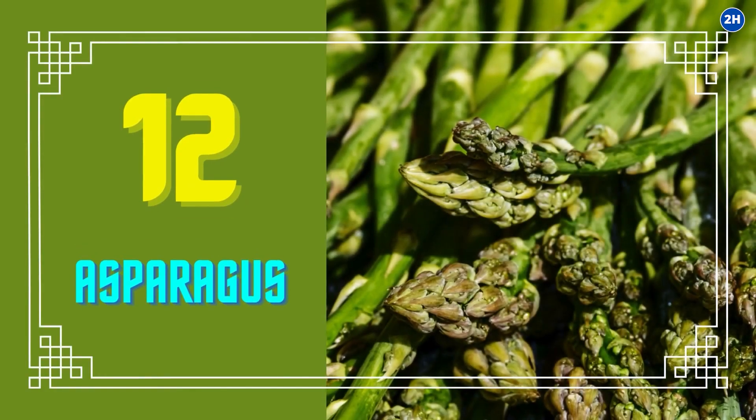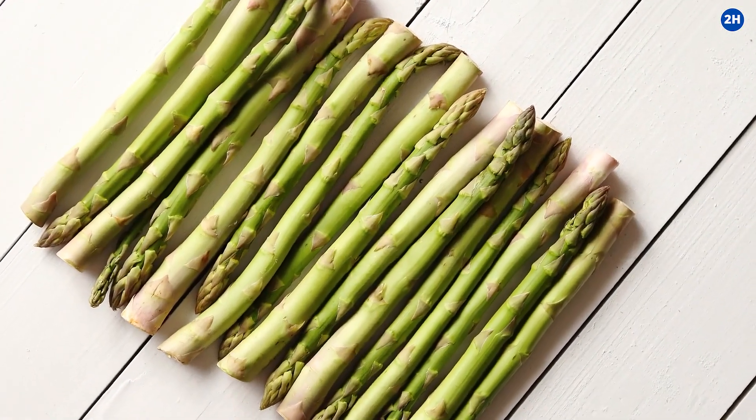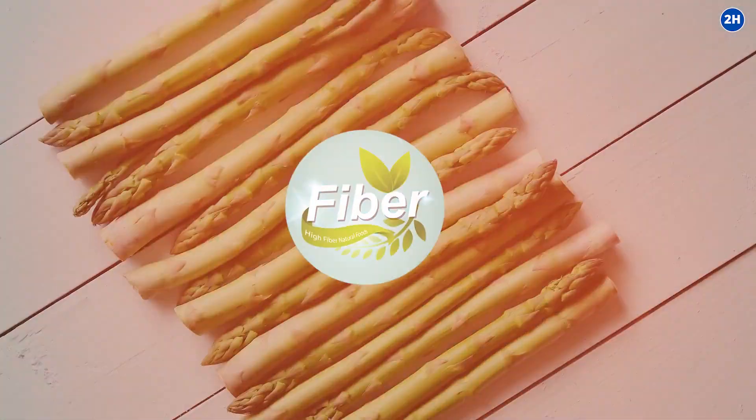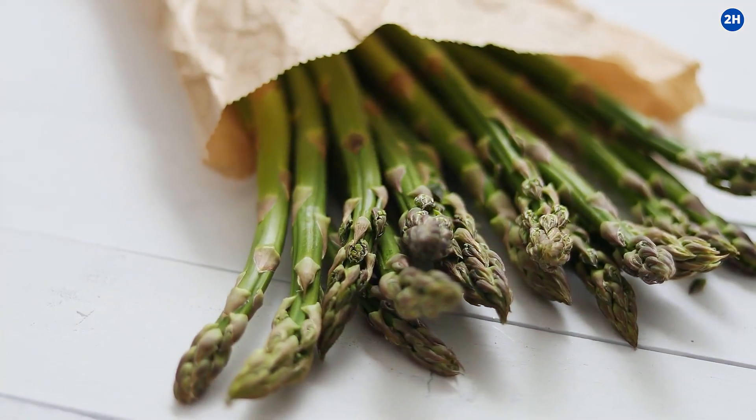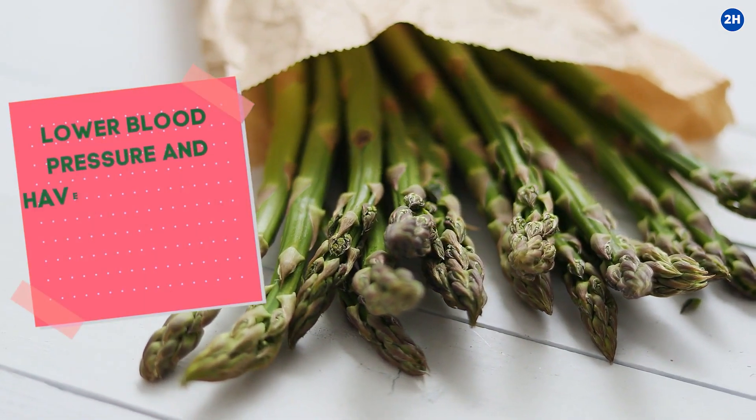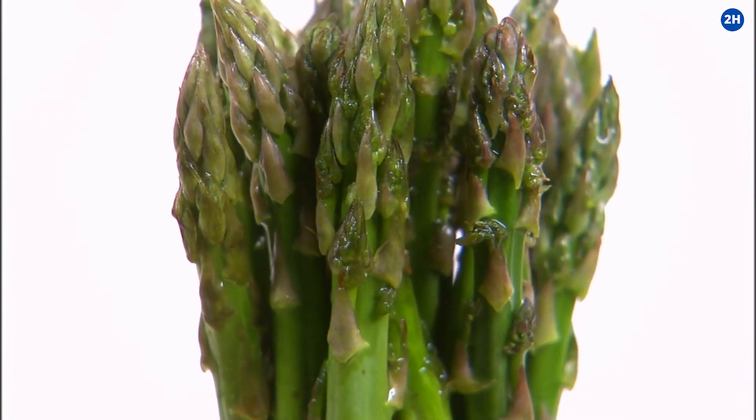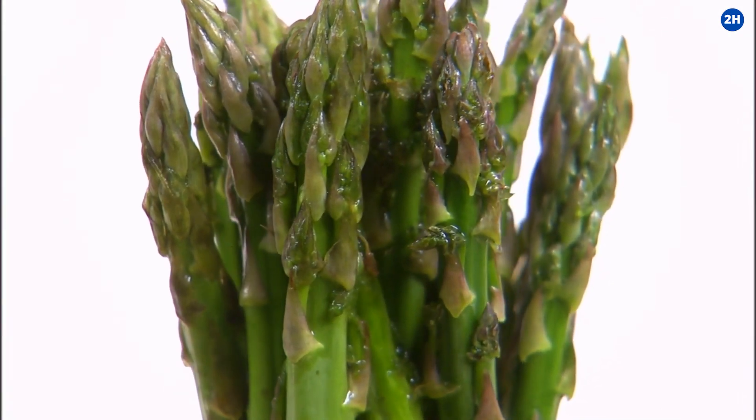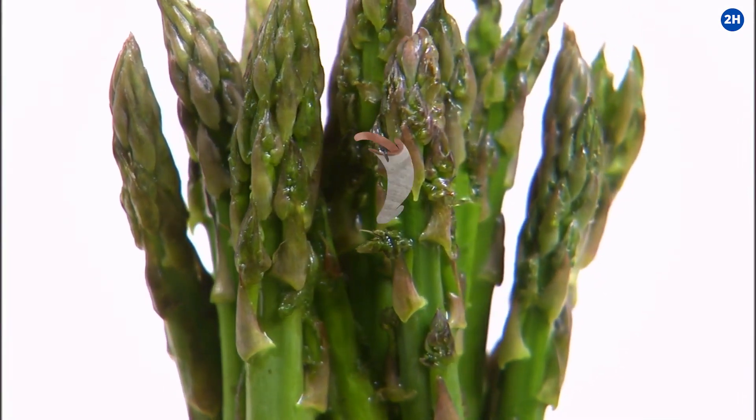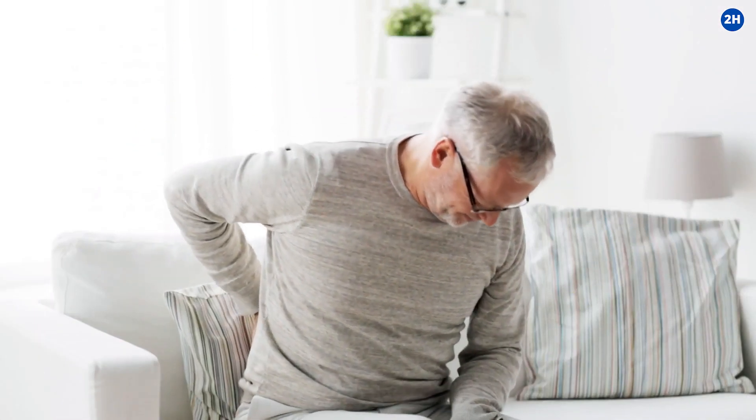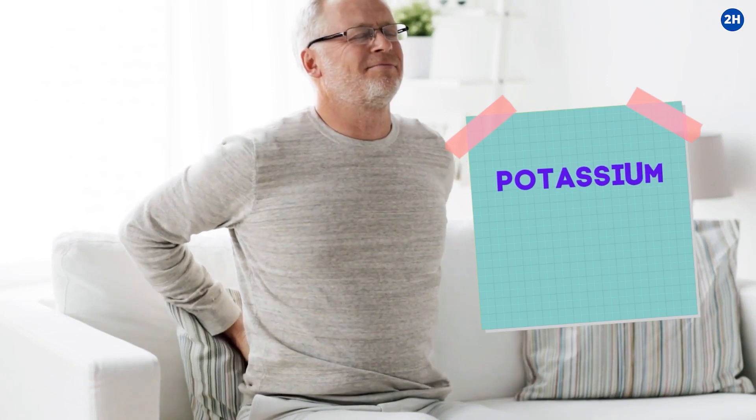12. Asparagus. An asparagus stalk is an excellent source of fiber. The phytonutrients in asparagus lower blood pressure and have a cleansing effect on the kidneys and bladder as they increase urine production and break down the uric acid. This is for prevention. People who already have kidney disease should be wary of asparagus as it is also rich in potassium and phosphorus.